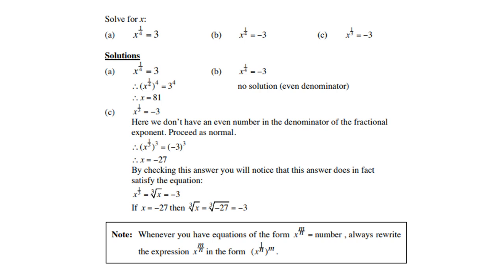C: x to the power of one-third equals a negative number. Here we don't have an even number in the denominator of the fractional exponent, so you can proceed as normal, because three is odd, so it should work. It gives you negative three to the power of three, which is negative twenty-seven. By checking this answer, you will notice that it does in fact satisfy the equation — if you do your substitution and check, you get negative three.